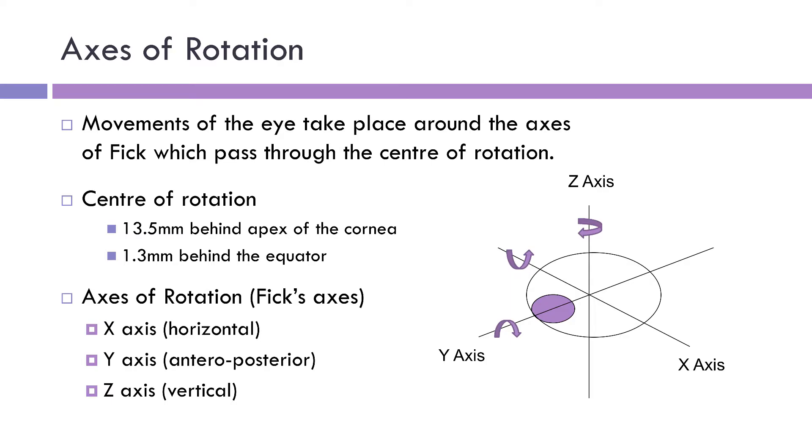What we know about eye movements is that eye movements take place around the axes of Fick, and there are three axes that relate to this. If we have a look here at an illustration of a cross-section of the eye, this is the cornea here, we can see the three axes. This is the z-axis, the vertical axis. Here is the horizontal axis, the x-axis and the y-axis. Each of these passes through the center of rotation of the eye.